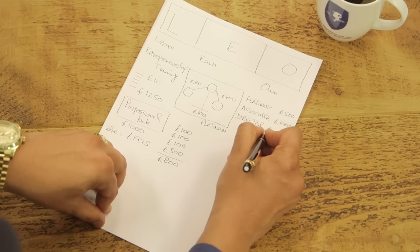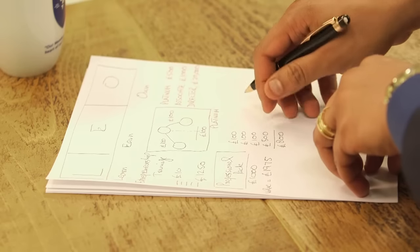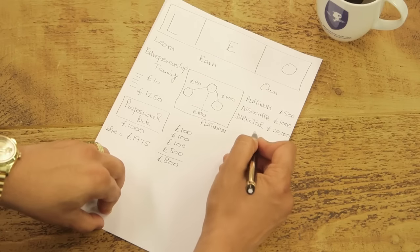And then the next level would be director. At the director level you will receive 20,000 pounds worth of business award.